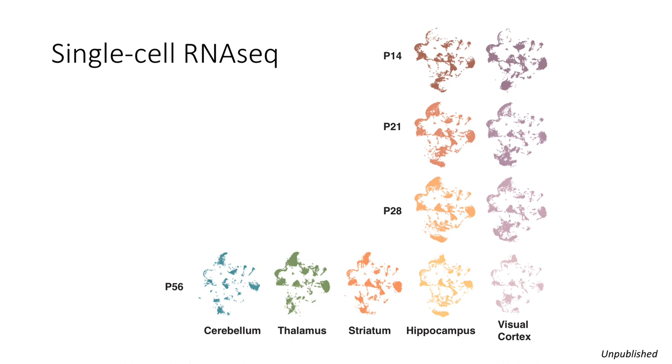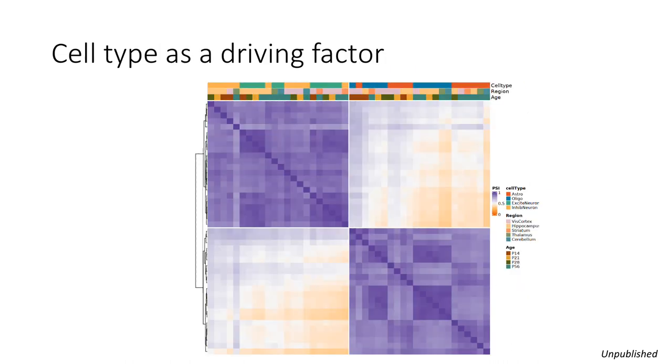So in order to answer that we collected data of single cell RNA-seq across multiple time points and multiple brain regions, and again I'm showing you a similar spearman correlation plot to the dummy one I had before, and we're again seeing a very clear difference between neurons and non-neurons. So this upper corner here is neuronal cell types and bottom corner here is non-neuronal cell types.